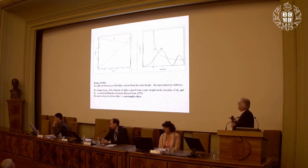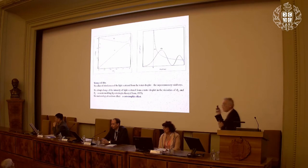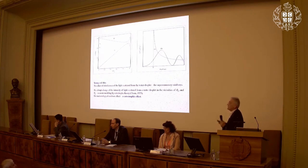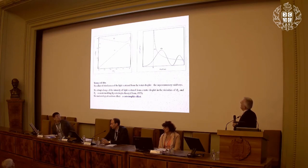Two values of the impact parameter give one value of the scattering angle, and the same holds for the secondary rainbow. This means you have two rays arriving at one angle — the observer sees two rays at one angle, and these rays can interfere. That is something new, and that is how Young and later Airy explained the supernumerary rainbows. Instead of the simple Descartes dependence, you have the primary rainbow and the first supernumerary rainbow — a very clear explanation.